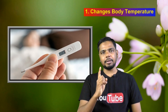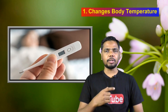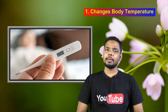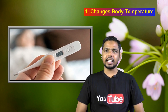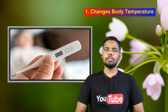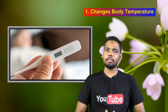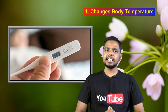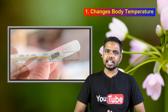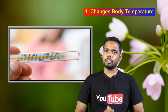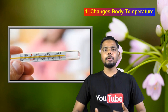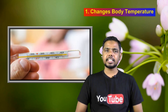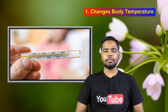Number one: changes in body temperature. Your basal body temperature can increase during ovulation compared to normal time. This increasing temperature can stay until your next period. If you become pregnant during the ovulation time, your temperature can stay higher for a long time.